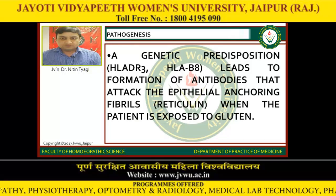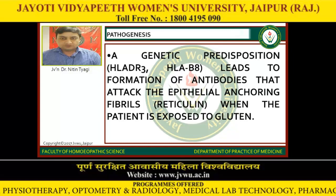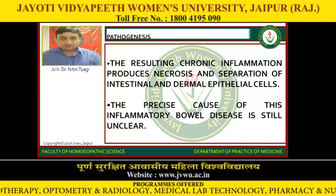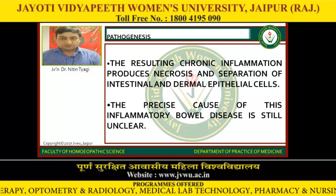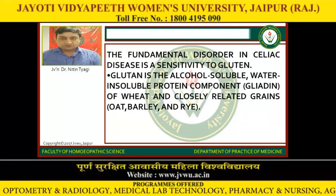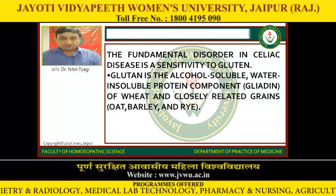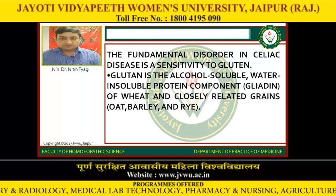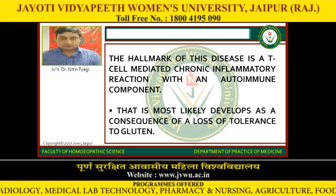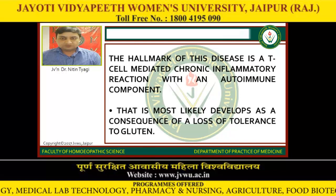Pathogenesis: a genetic predisposition leads to formation of antibodies that attack the epithelial and connective fibrils — reticulin — when the patient is exposed to gluten. The resulting chronic inflammation produces necrosis and separation of intestinal and dermal epithelial cells. The precise cause of this bowel inflammation is still unclear. The fundamental disorder in celiac disease is sensitivity to gluten. Gluten is the alcohol-soluble, water-insoluble protein component known as gliadin, found in wheat and closely related grains like oats, barley, and rye. The hallmark of this disease is a T-cell mediated chronic inflammatory reaction with an autoimmune component, most likely developed as a consequence of a loss of tolerance to gluten.